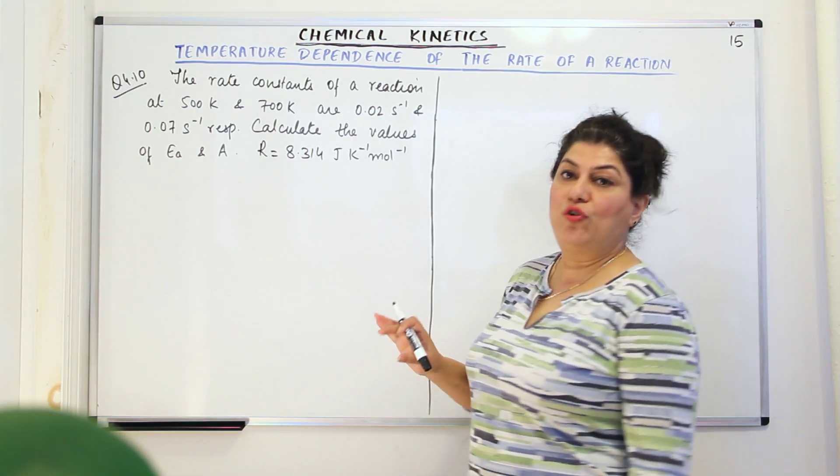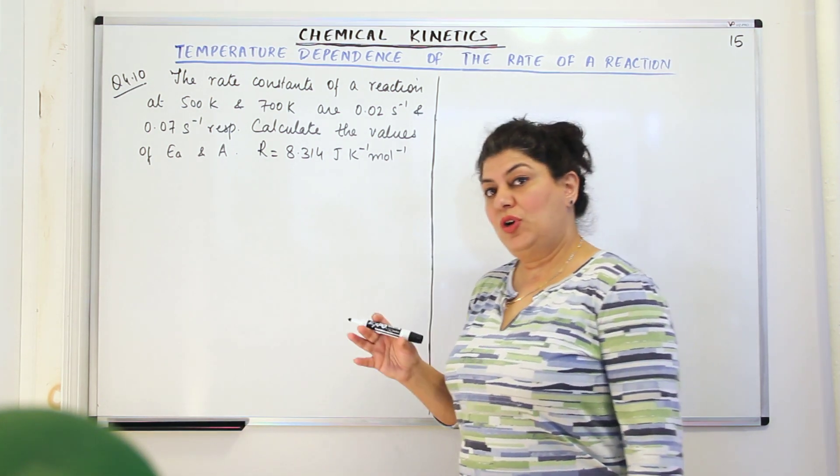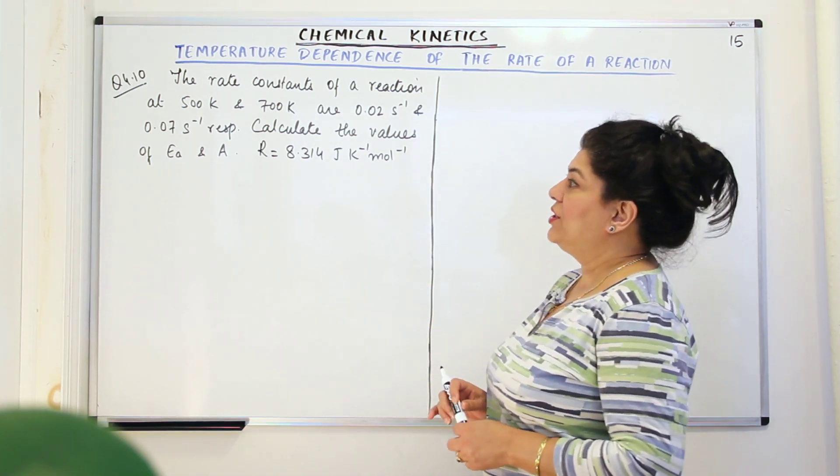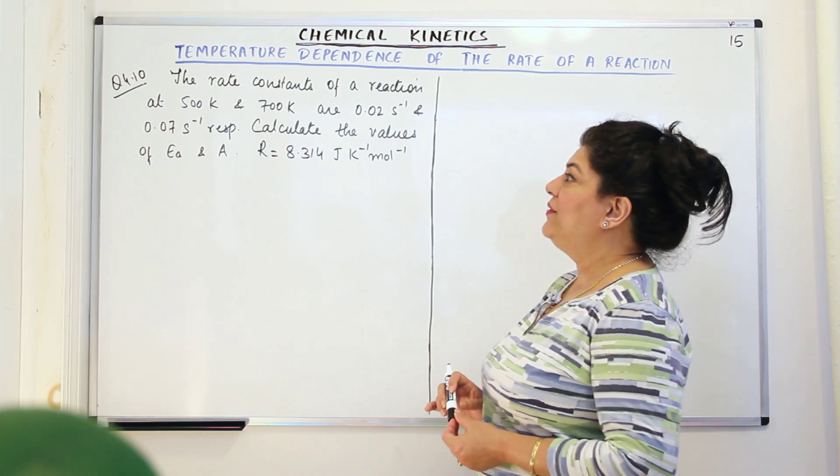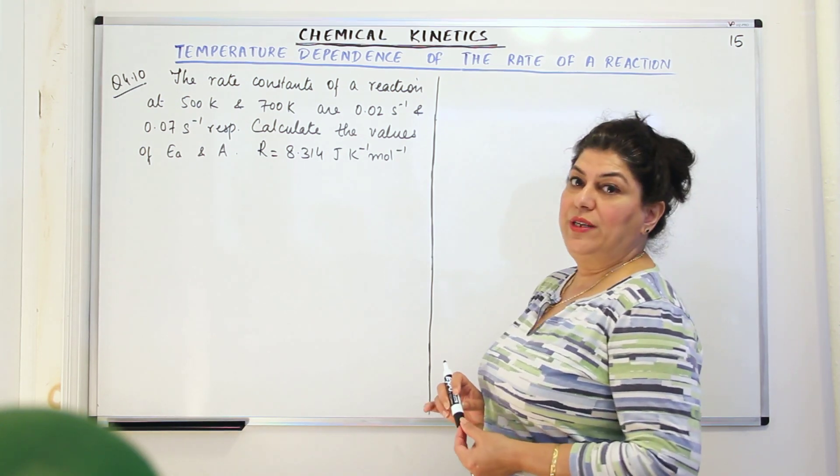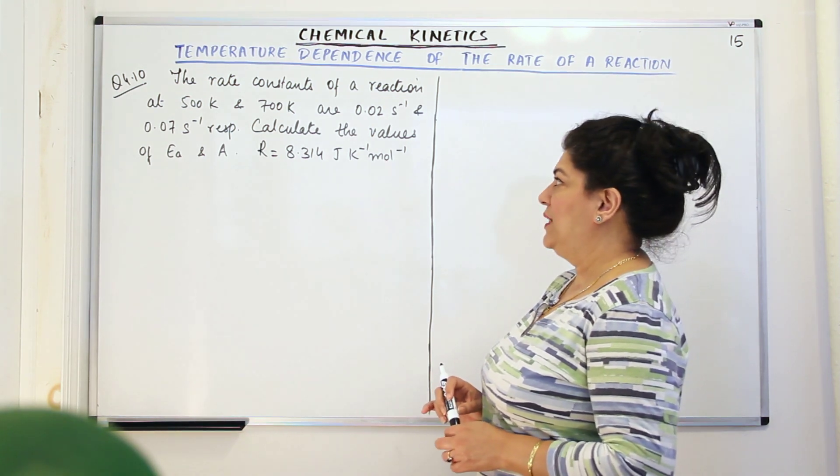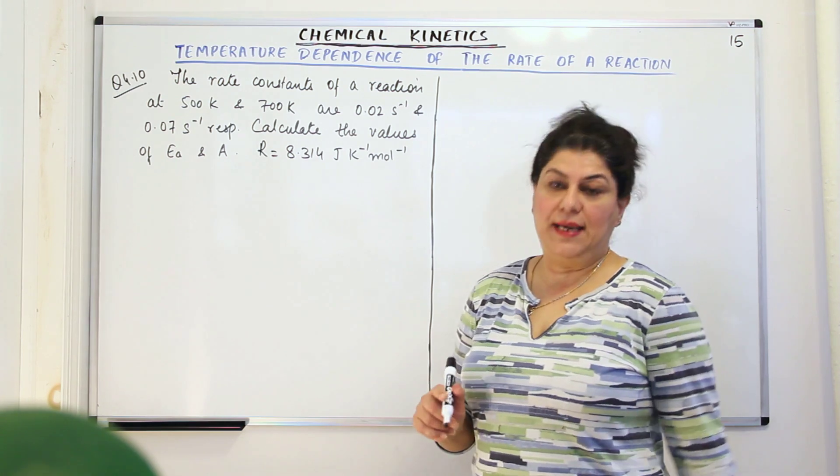This first question is question 4.10, a solved example from your NCERT textbook. The question reads: the rate constants of a reaction at 500 Kelvin and 700 Kelvin are 0.02 per second and 0.07 per second respectively. You have to calculate the values of Ea and A.